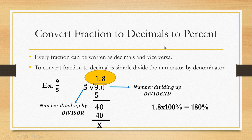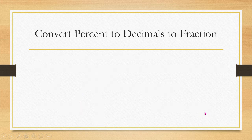This decimal 1.8 can also be expressed as a percent. To convert a decimal to percent, simply multiply by 100. So 1.8 times 100 equals 180, meaning 9/5 = 180%.